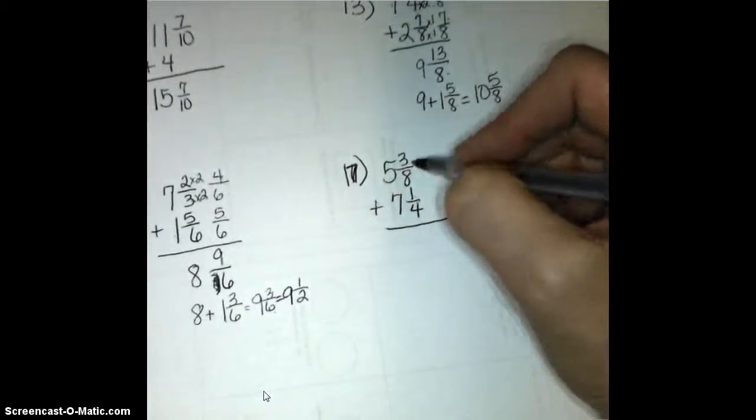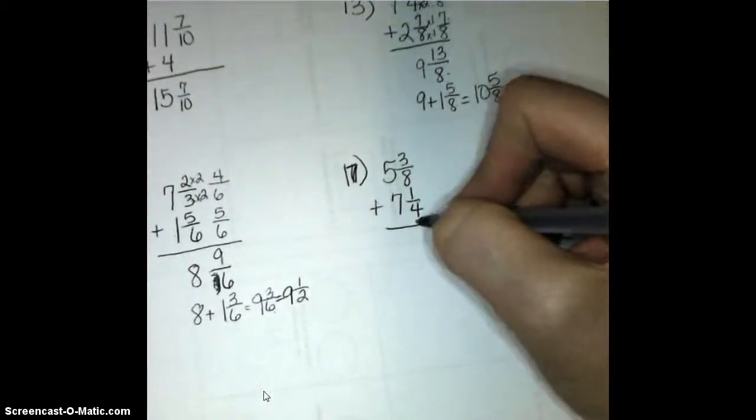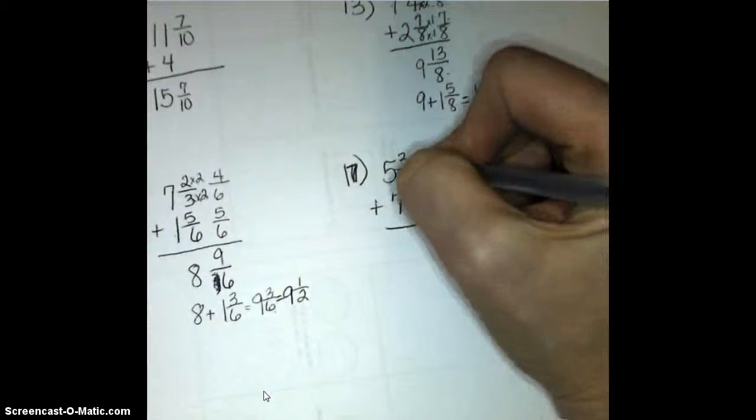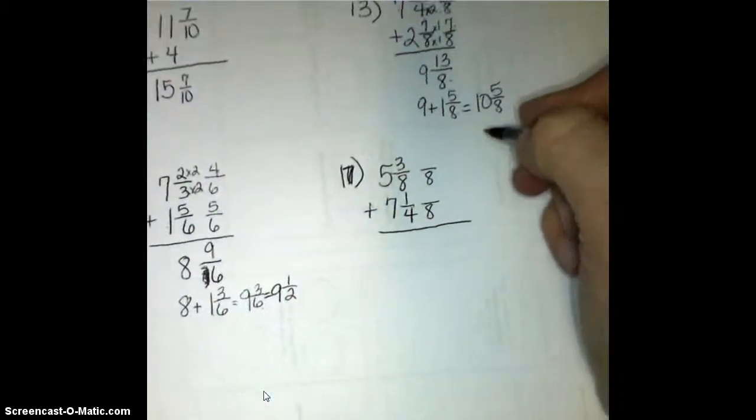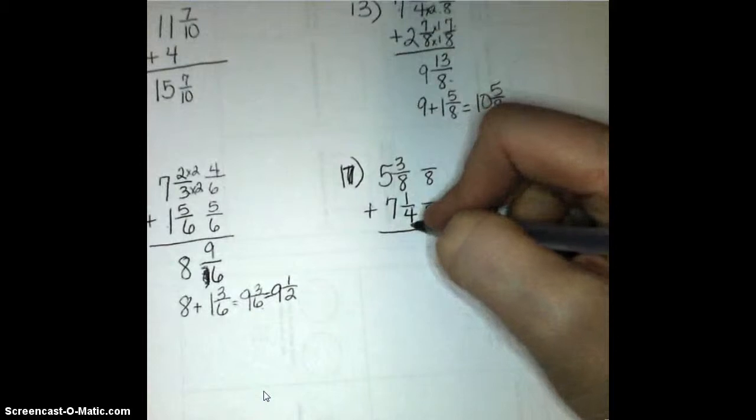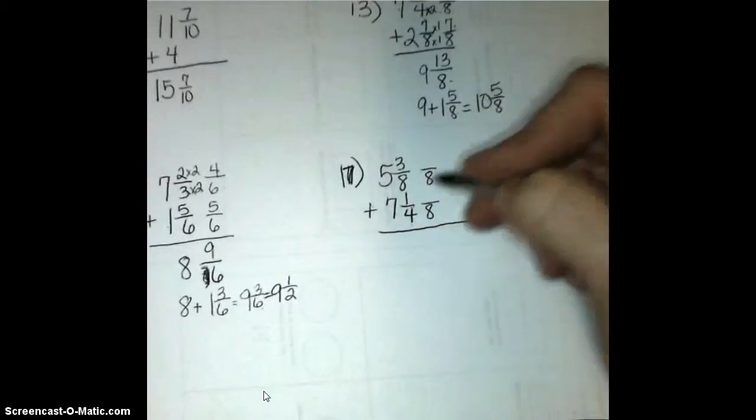On to number 17. 5 and 3 eighths plus 7 and 1 fourth. My common denominator here would be 8. It's not the only common denominator, but it is the smallest one. We could also have 32 there. We could also have 16.